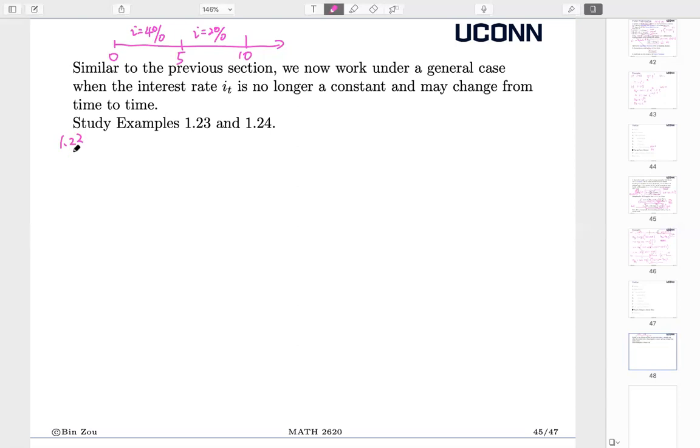In this simple example, interest rate changes from 4% to 2%. So for the first five years, you use 4%. For the next five years, you use 2%. So that's basically what this chapter is about. So we study two examples. 1.23. $100 is invested at time zero.